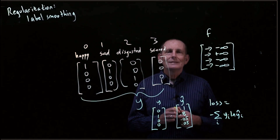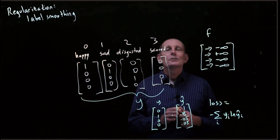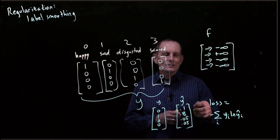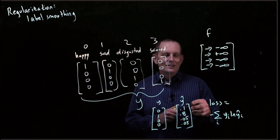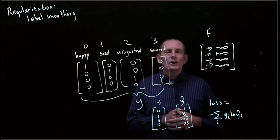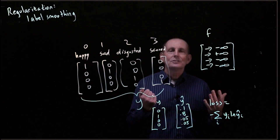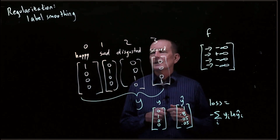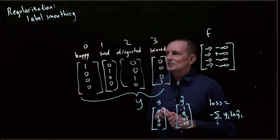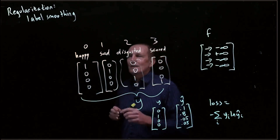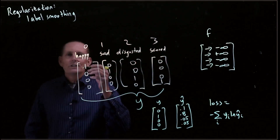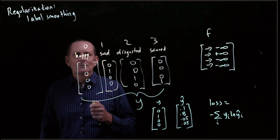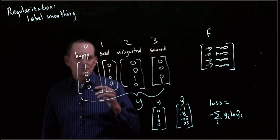Label smoothing says: let's not be so dogmatic. Rather than trying to get to exactly 0, 1, 0, 0, why don't we just try to get close to 0, close to 1, close to 0, close to 0? So label smoothing means these are not smooth labels — these are rough labels.